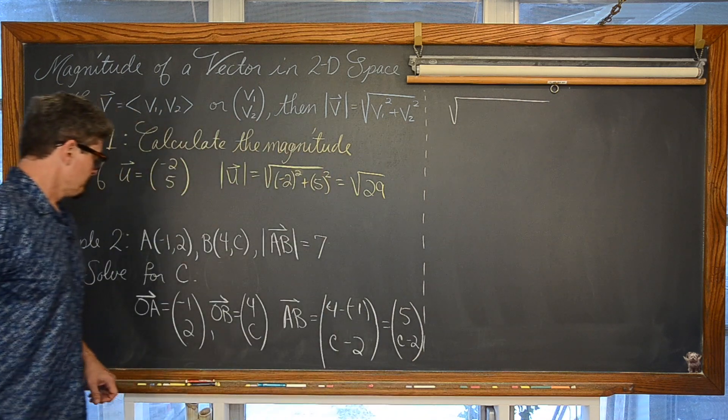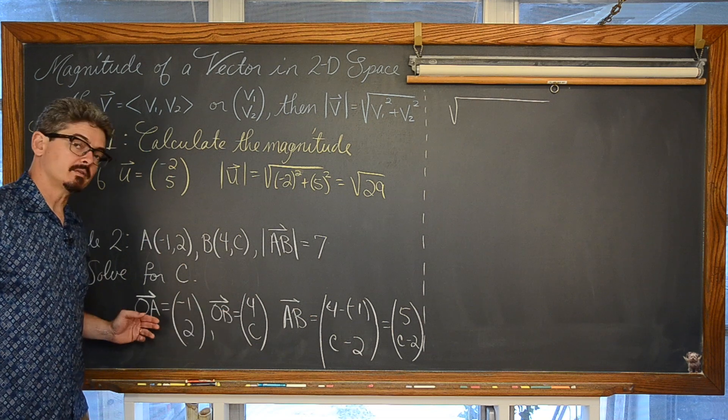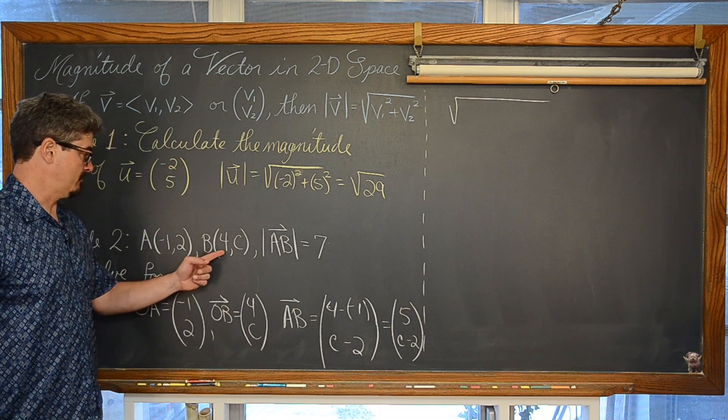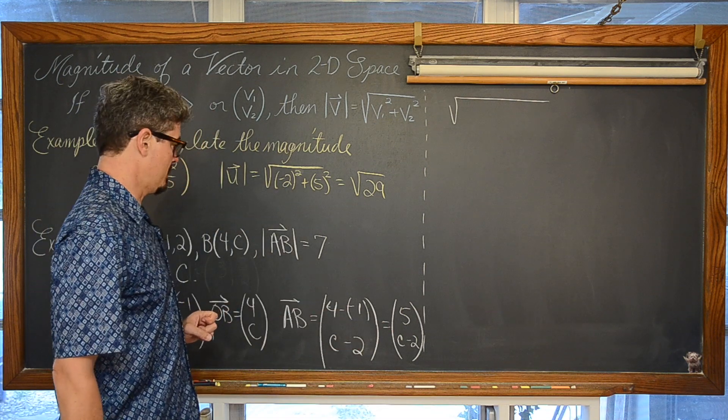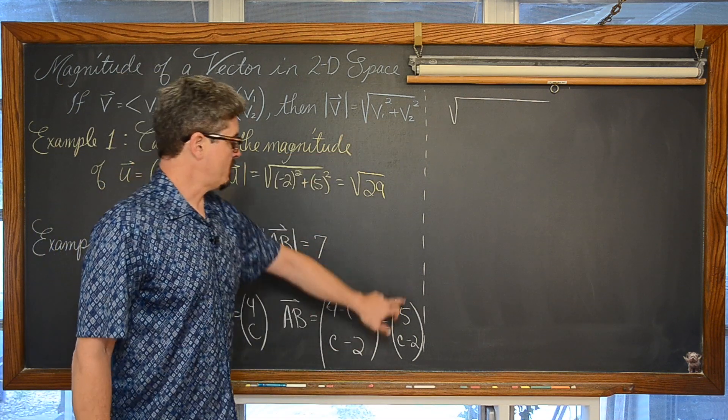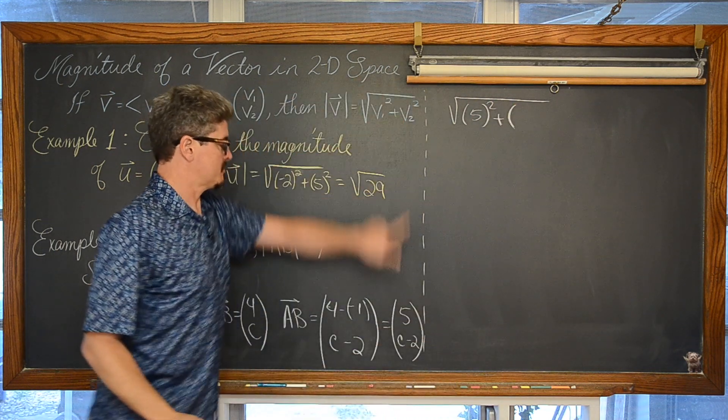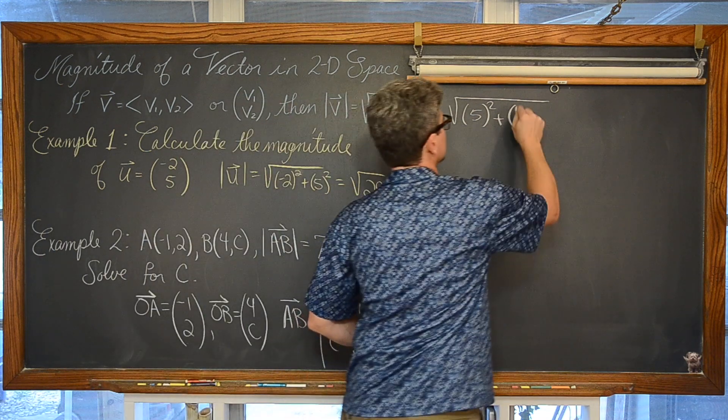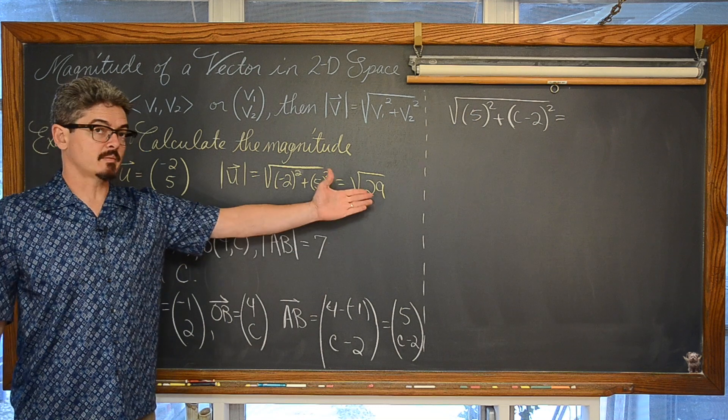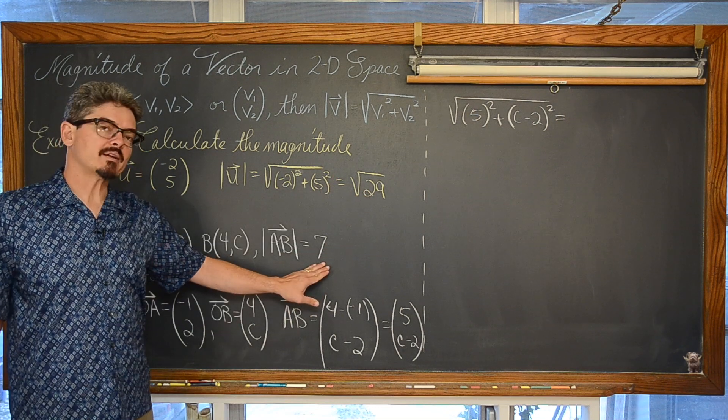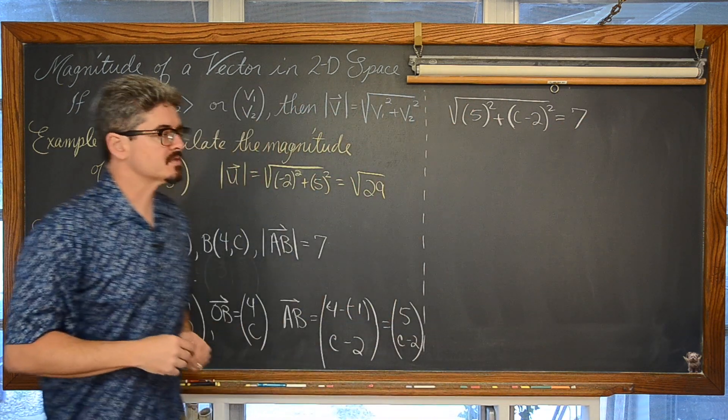Ok. It is not necessarily, your textbook may very well not be writing out these position vectors first and just doing 4 minus negative 1, and C minus 2, and going straight to that vector AB. So V sub 1 squared, V sub 2 squared, and of course we are given that magnitude, we are using the magnitude formula, we are given that magnitude is equal to 7, not the previous example of square root of 29. And we just have to solve this for C.